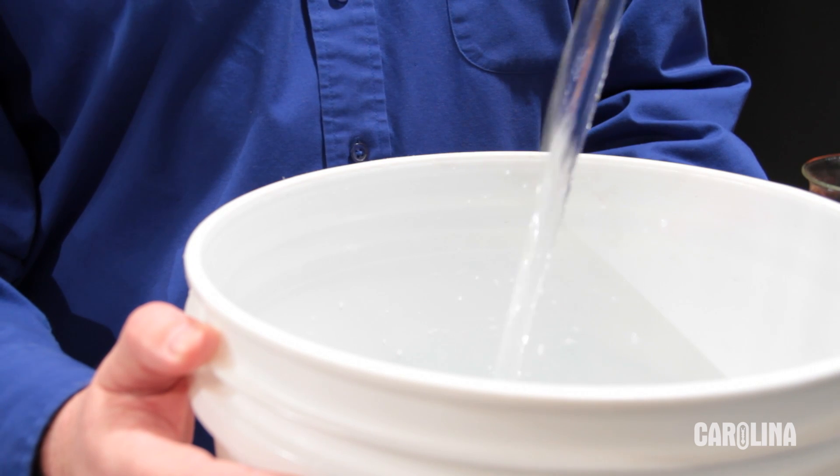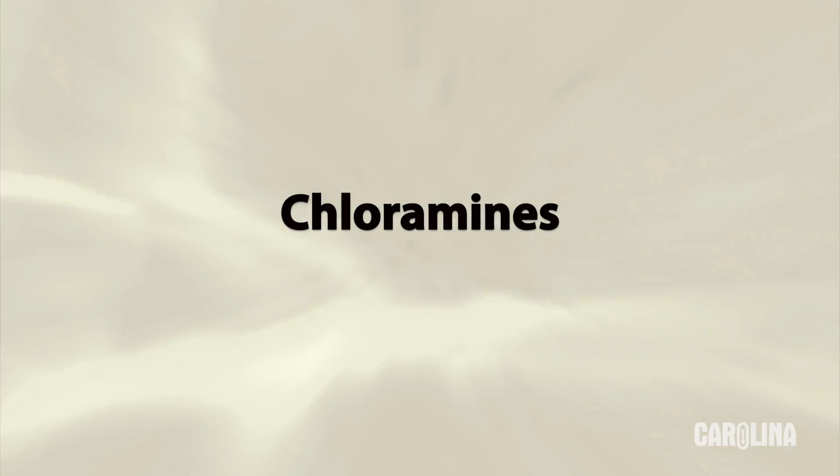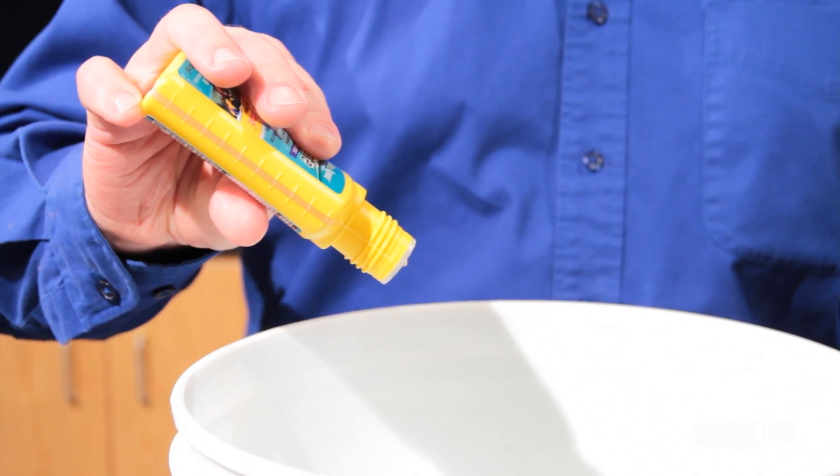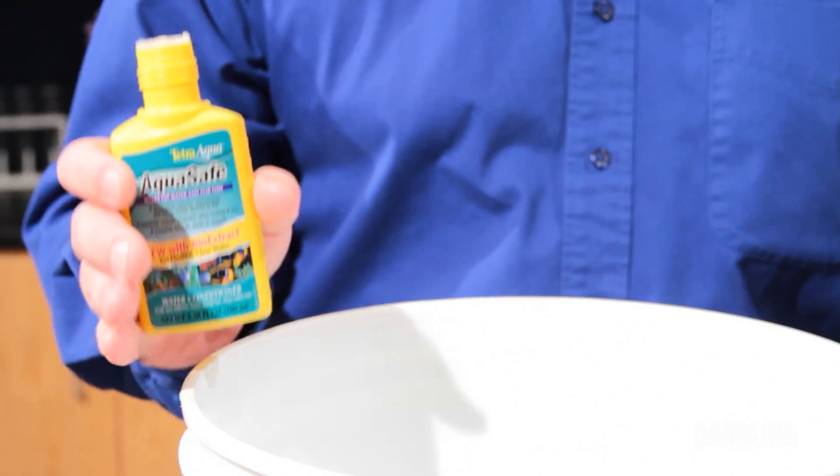Have plenty of room temperature water on hand for the tadpoles. Use spring water or tap water. Most tap water now contains chloramines to improve drinking water quality. However, chloramines will kill your tadpoles and most aquatic organisms. Tap water must be treated with a dechlorinator that removes chloramines. Prepare your water before you receive your tadpoles.